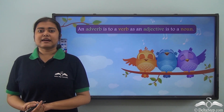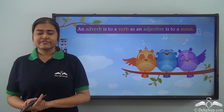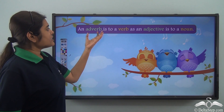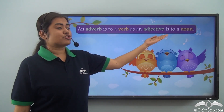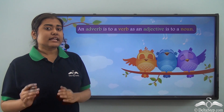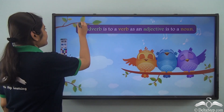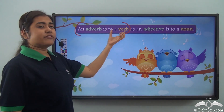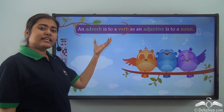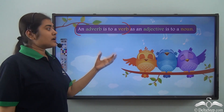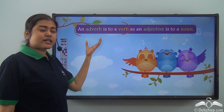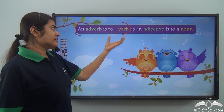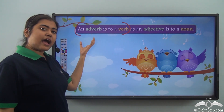Today let us learn something very interesting. First read this sentence carefully: an adverb is to a verb as an adjective is to a noun. Now let us take this up part by part. First, an adverb is to a verb — what is the relationship between an adverb and a verb? An adverb helps us to modify or qualify a verb. So in other words, a verb is described by an adverb.